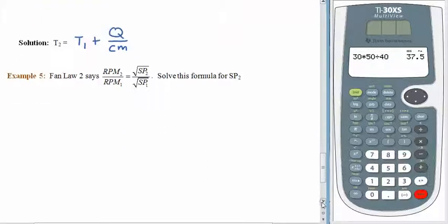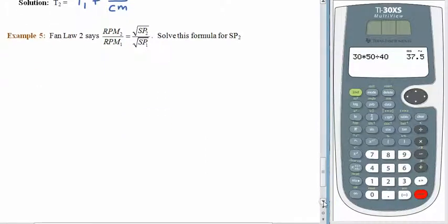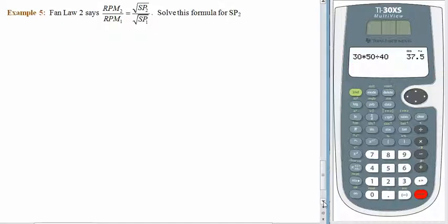Let's look at Fan Law 2. The relationship between the RPMs and the static pressure. Okay. So our job here is to isolate SP2, the stuff underneath that square root. The first thing that we're going to have to do is move the square root of SP1. Then we can deal with the square root around SP2. And yeah, you know, I think I'm going to do that again to you. Try it. Pause the recording. Come back. See how it works.